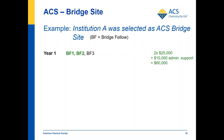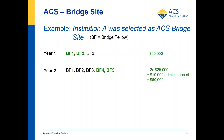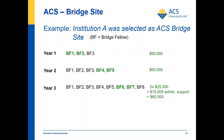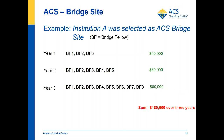In the second year, institution A selects two new bridge fellows who receive the $25,000 flat rate payment from ACS plus $10,000 institutional support. In the third year, three more bridge fellows are selected, with only two receiving stipend funding through ACS. Summing it all up comes to a total of $180,000 over three years.